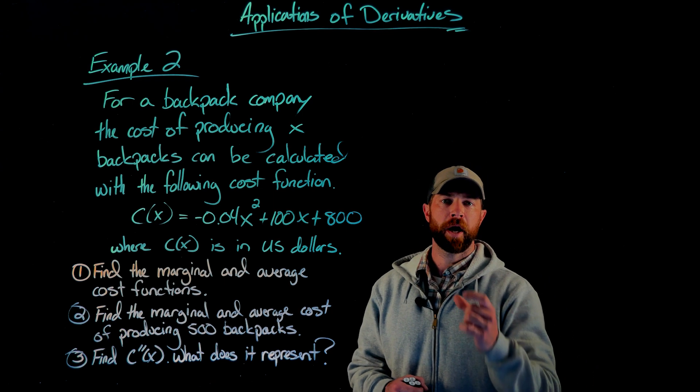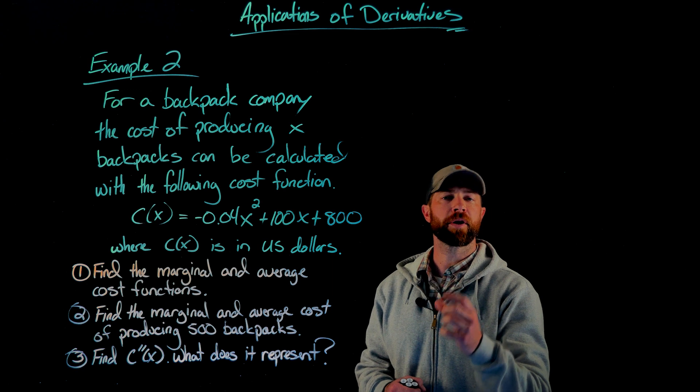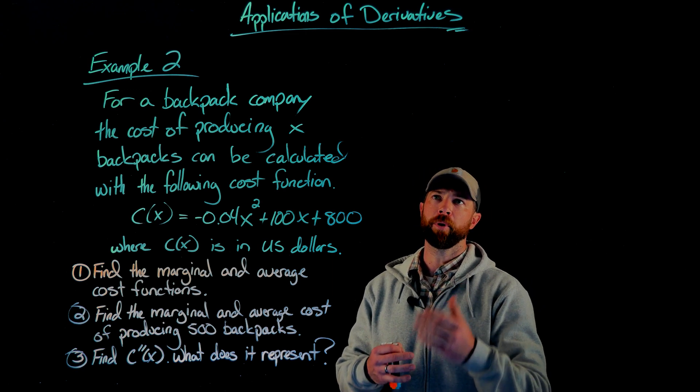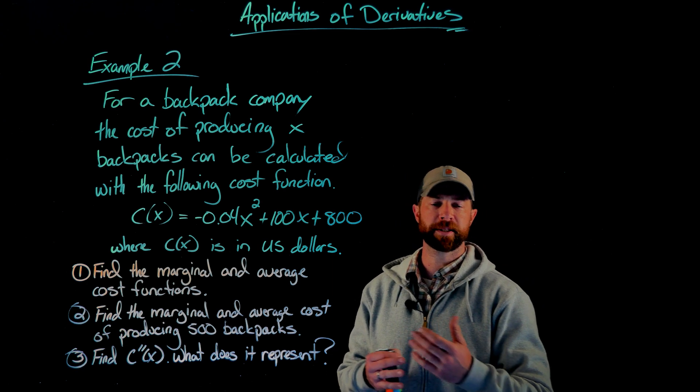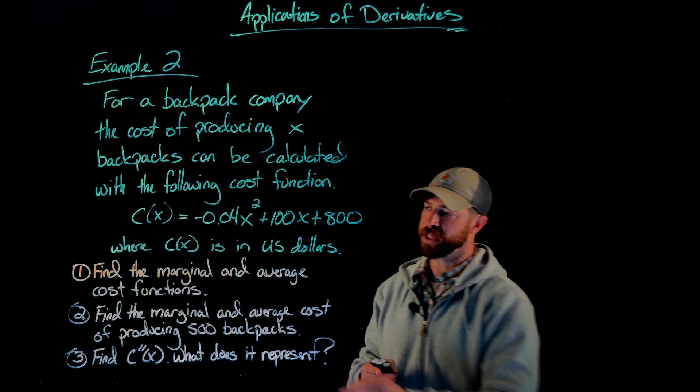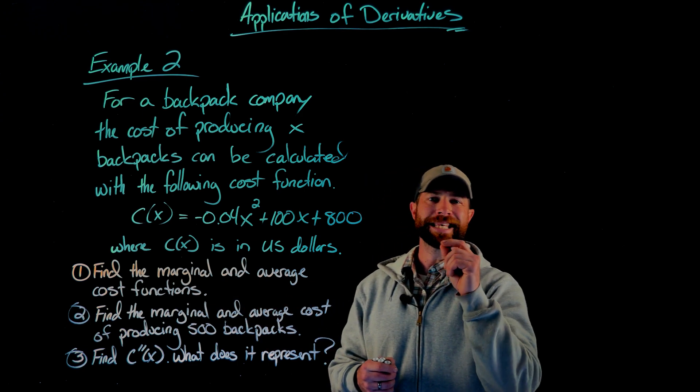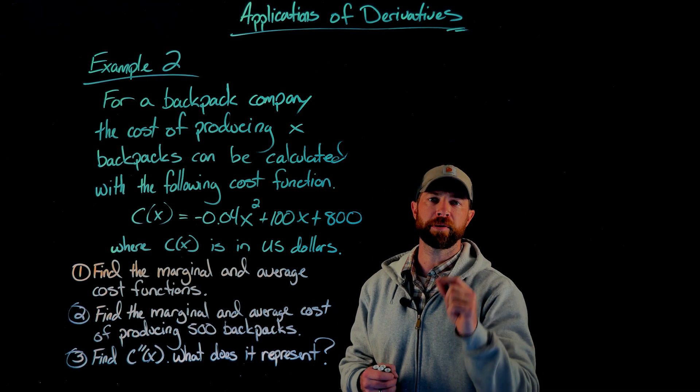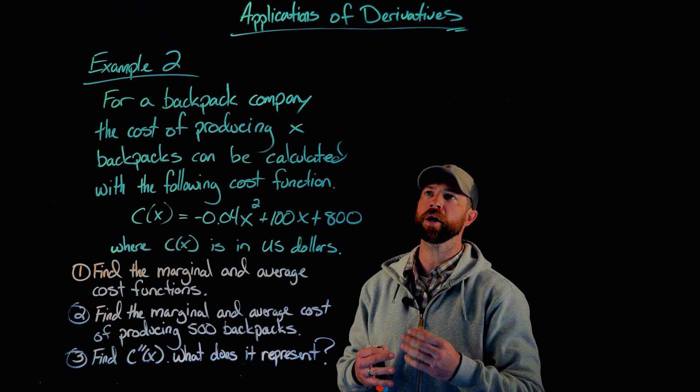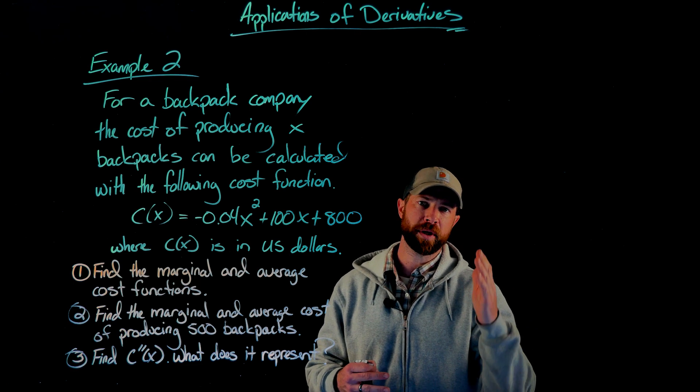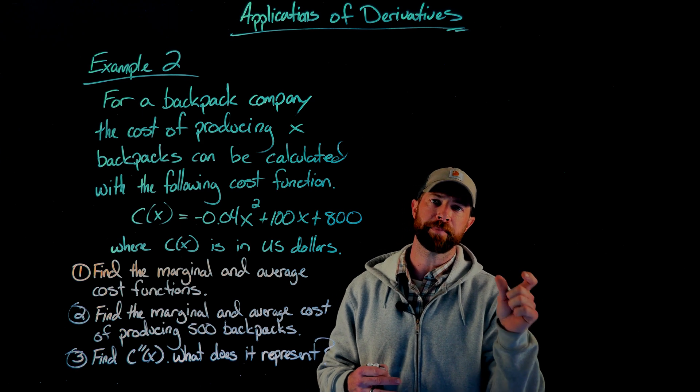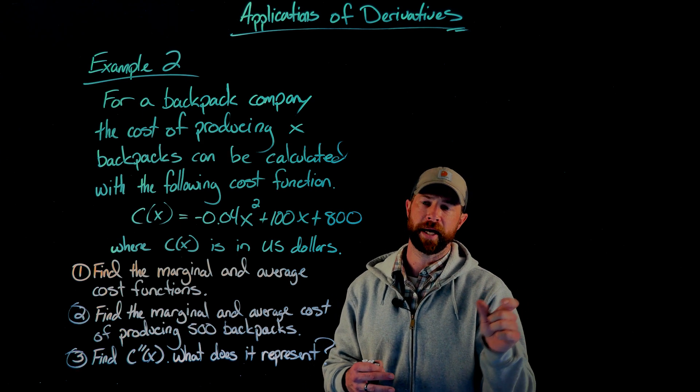The marginal and average cost functions are very similar in some ways but also very different. They both will have the same units as cost per backpack, but the marginal cost function calculates the exact price of producing a certain backpack. For instance, if we wanted to know, if we were to make 100 backpacks, what is the actual cost of that hundredth backpack to create?